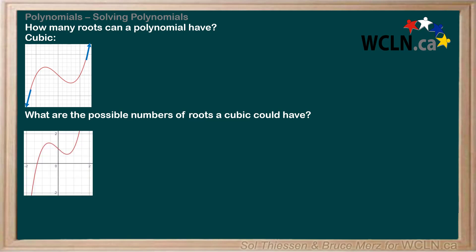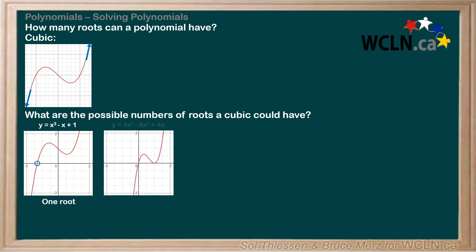For example, look at this graph of y equals x cubed minus x plus 1. It has one root, since it must cross the x-axis at least once. If one of the turns of a cubic is just touching the x-axis, like in this graph of y equals 4x cubed minus 8x squared plus 4x, then the cubic will have two roots. Remember, we say that the plot is tangent to the x-axis at the singular point where the turn touches the axis.